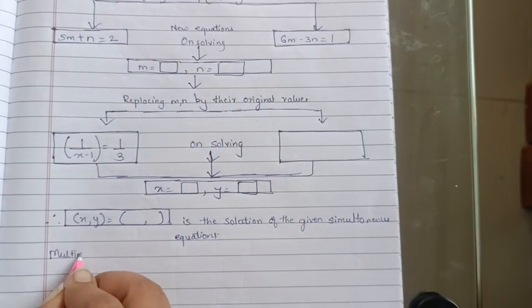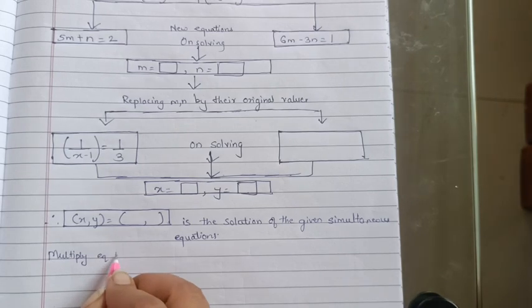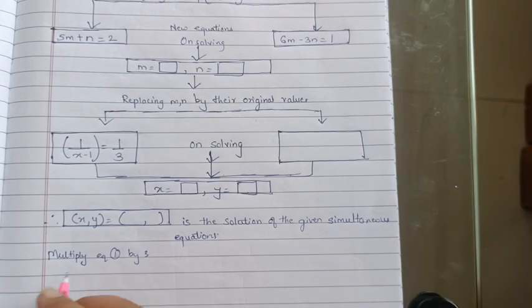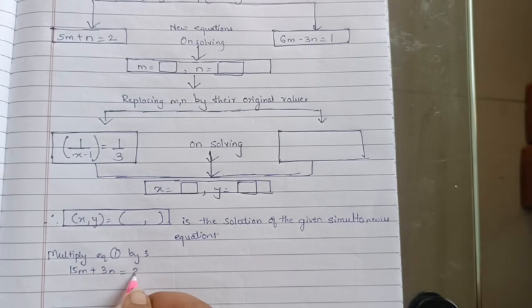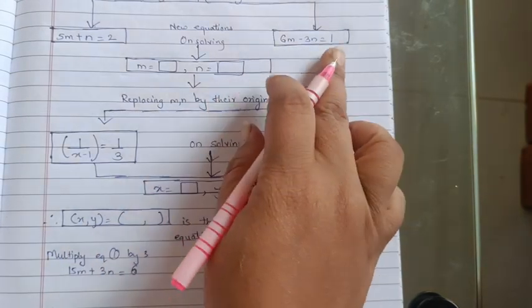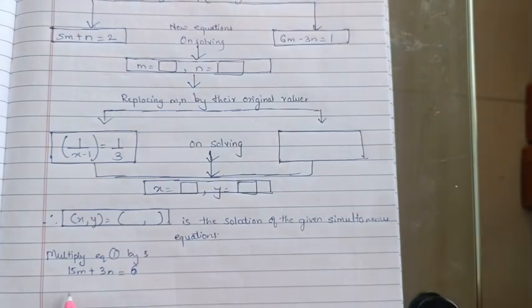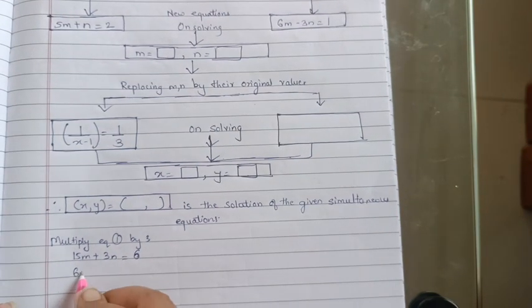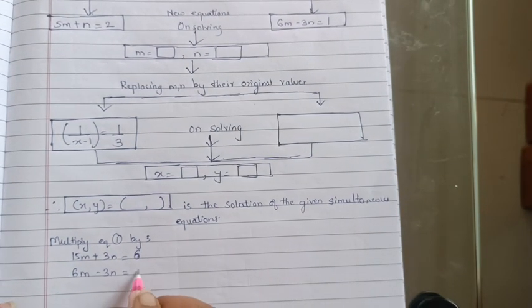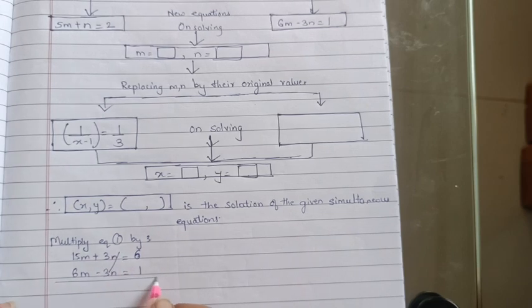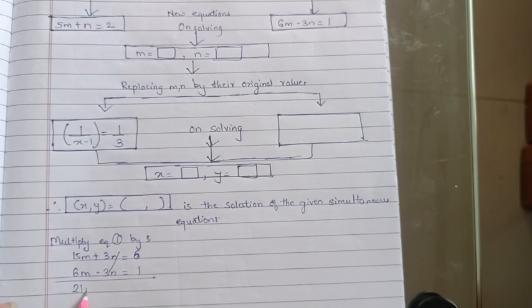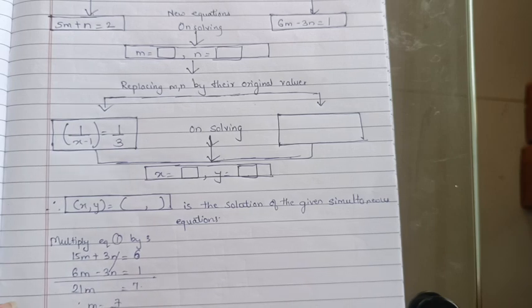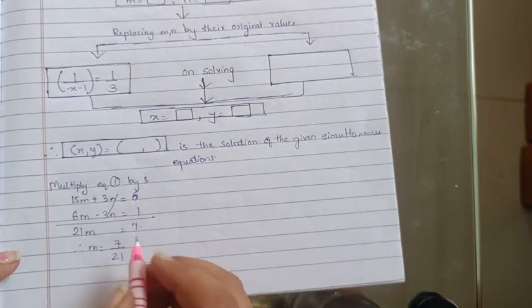Solve it. Multiplying equation 1 by 3: 15m + 3n = 6. Adding the two equations: 15m + 3n = 6 and 6m − 3n = 1, we get 21m = 7, therefore m = 7/21.